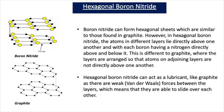Let's start by looking at hexagonal boron nitride. Boron nitride can form hexagonal sheets which are similar to those found in graphite. However, in hexagonal boron nitride the atoms in different layers lie directly above one another, with each boron having a nitrogen directly above and below it. This is different to graphite, where the layers are arranged so that atoms on adjoining layers are not directly above one another. Hexagonal boron nitride can act as a lubricant just like graphite, because there are weak van der Waals forces between the layers, which mean that the layers can slide over each other.